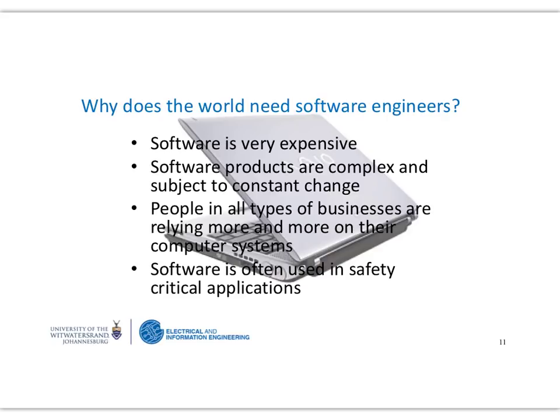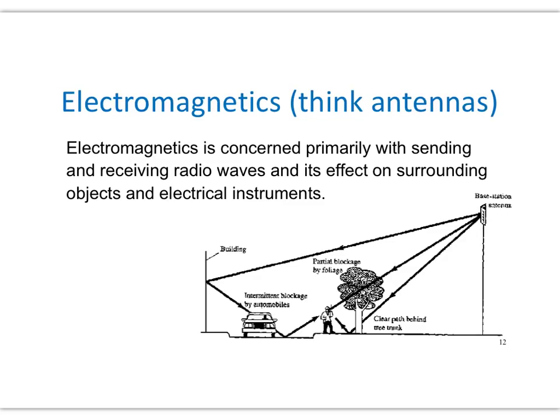Software is often used in safety-critical applications, for example in hospitals and in airplanes. If you do electrical and information engineering, you'll also be doing some electromagnetics. When I talk about electromagnetics, you should think about antennas. Electromagnetics is concerned primarily with sending and receiving radio waves and other electromagnetic waves, and the effect of those waves on surrounding objects and electrical instruments.